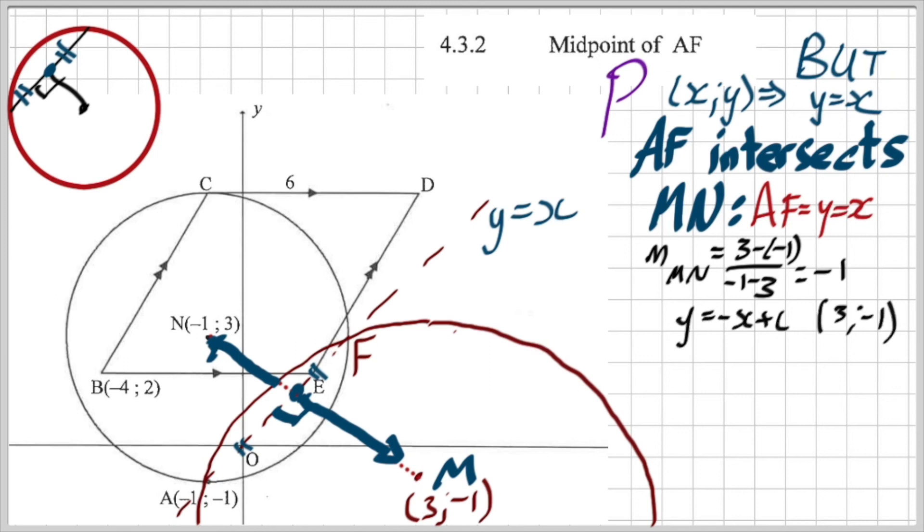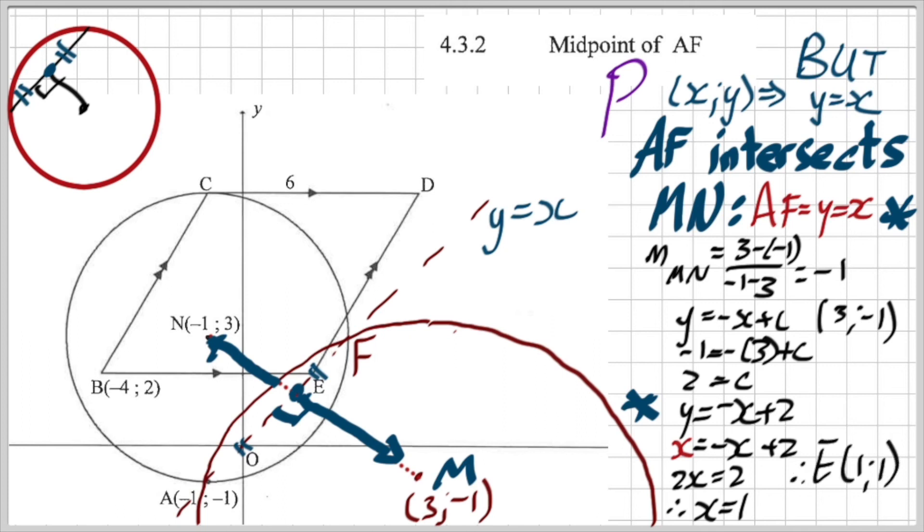And then I'm going to solve them simultaneously. So if I've got the line MN, the gradient, I can now get the rest of the equation by substituting. So the equation of the line MN is Y equal to negative X plus 2. And I'm looking where it intersects Y equal to X. So I'm going to solve simultaneously. So I've got X equal to negative X plus 2, which gives me 2X equal to 2 and X equal to 1. And I know that Y is equal to X. So not E as I wrote down initially, but let's call that, what did we call it? We called it P, is the set of coordinates 1, 1.